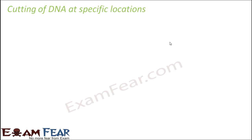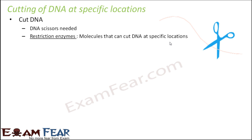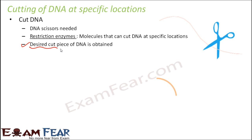The next step is cutting of DNA at a specific location. Now that we have the pure DNA, we want to cut it at a specific location so we can take only the piece that contains the gene of interest. This involves DNA scissors — the restriction endonuclease enzymes — which cut DNA at specific locations. These enzymes can produce either sticky ends or blunt ends. The restriction enzyme cuts the DNA so we get only the desired piece containing the gene of interest, since it is better to carry just that small part.